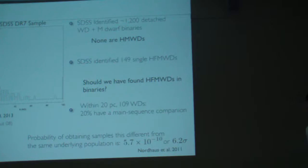And you can ask the question, should we have a balance of those in binaries? Within 20 parsecs, there are 100 white dwarfs, 20% of which have a main sequence companion.